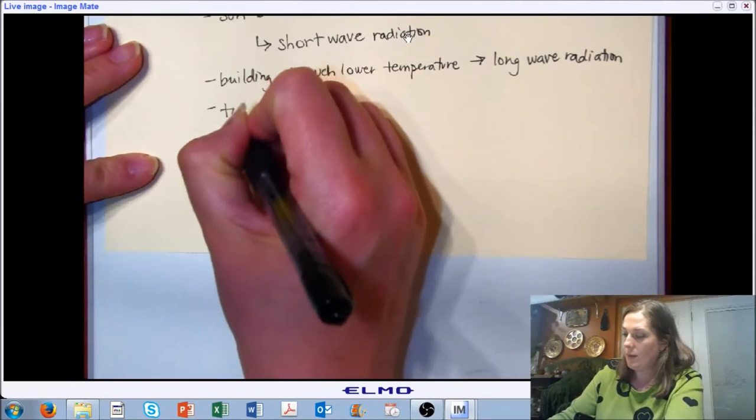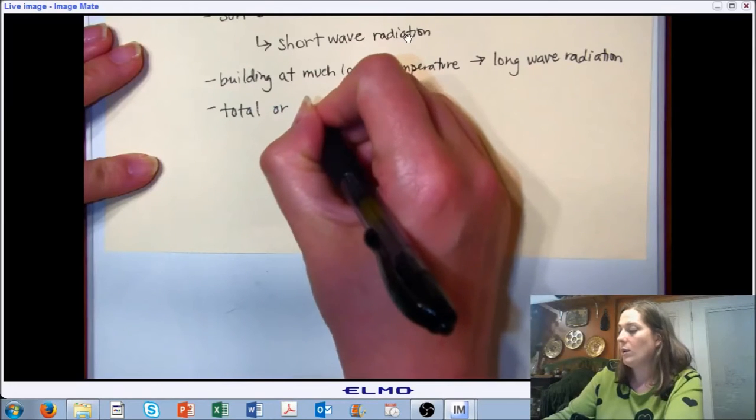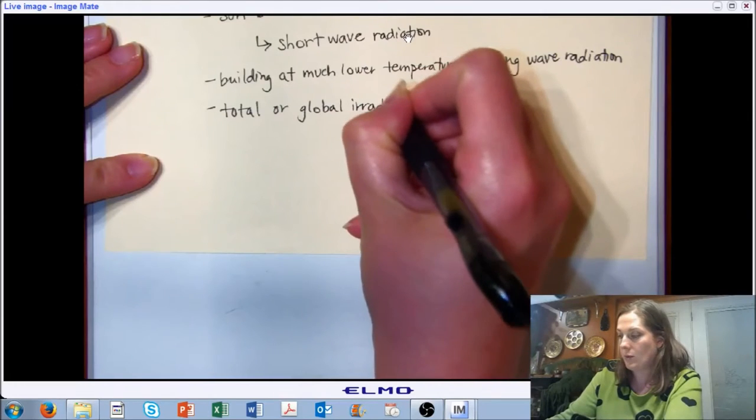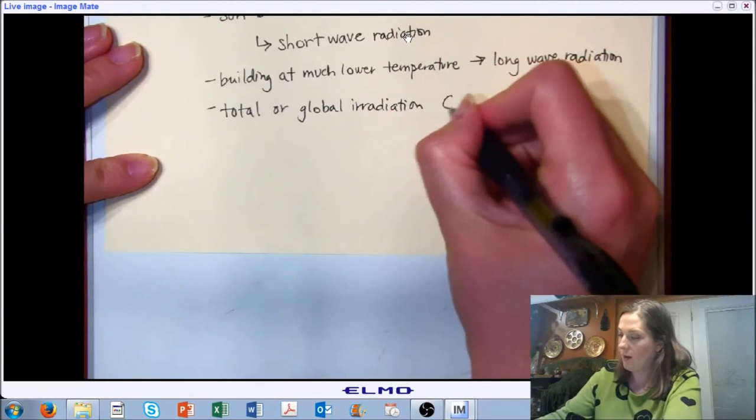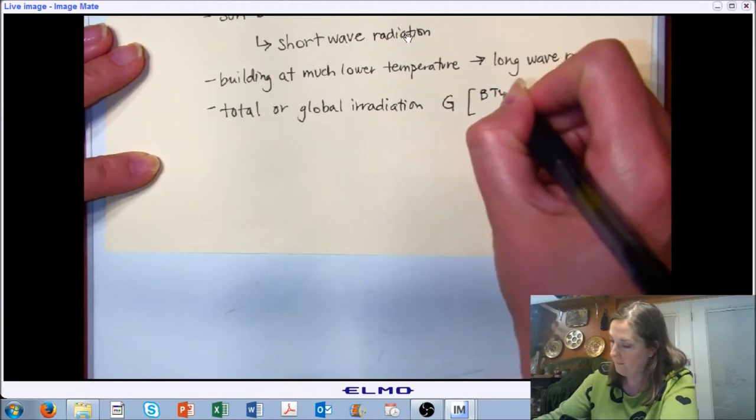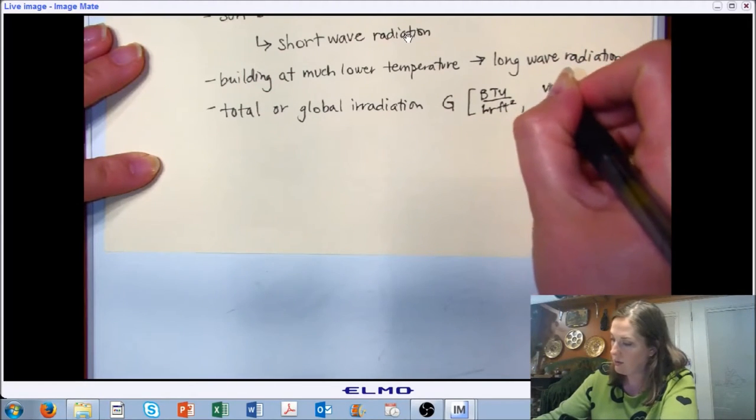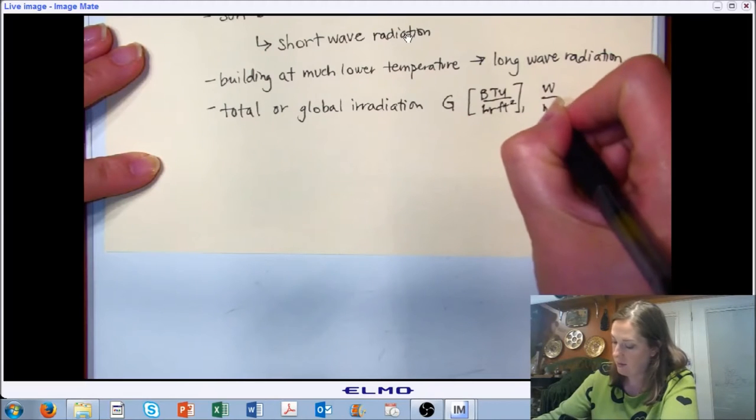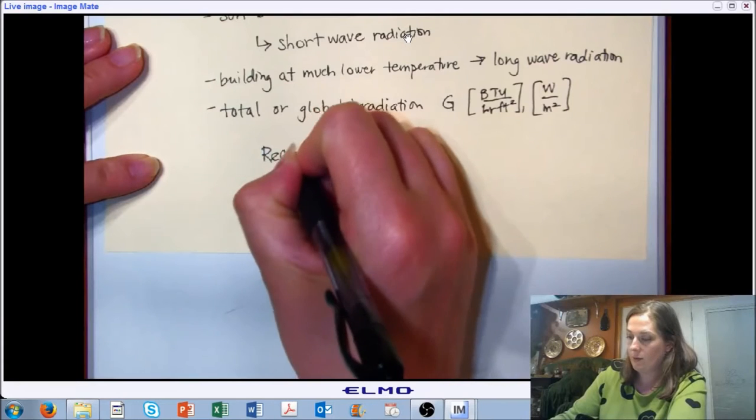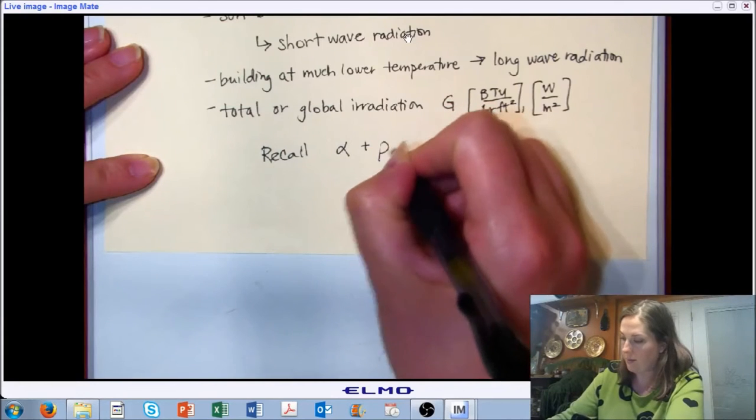We're going to be interested in something called the total or the global irradiation. Irradiation is what actually comes upon the surface. It's going to be noted in this chapter as a capital G, and we can have it either in English or metric units.